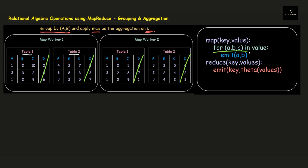As per the algorithm, we need to iterate over all the values and emit the key part as the set of attributes coming under the grouping operation, and under the value part we mention the attributes coming under the aggregation operation. In this problem we group A and B, so those two attributes come under the key part, and we aggregate C, so the elements present in attribute C come under the values section.